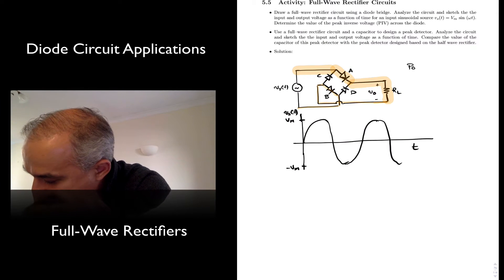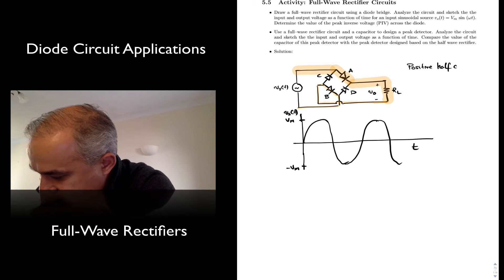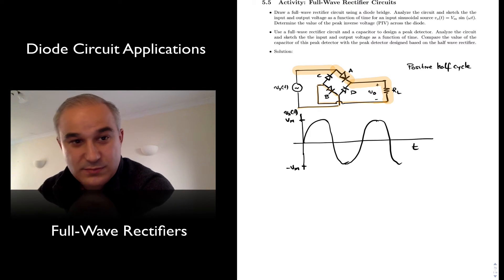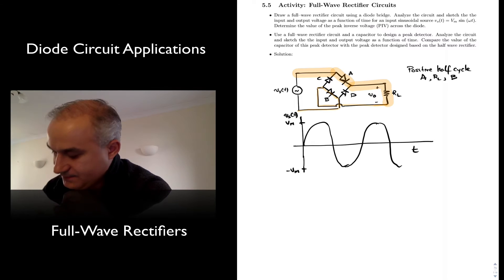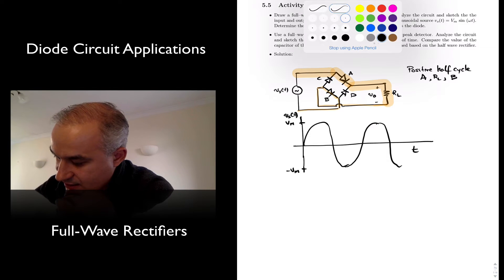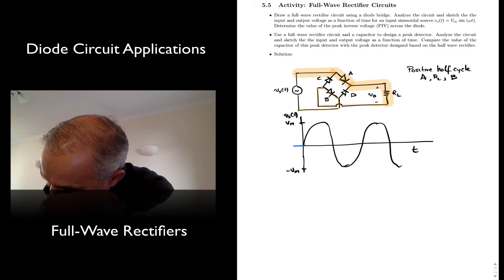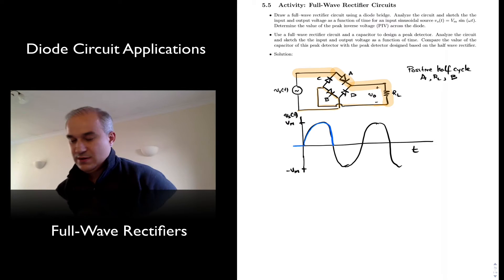So what we have is, during the positive half cycle, we have a path that is A, RL, B. And if we had an ideal diode, this is what would happen.